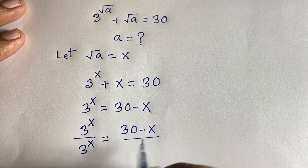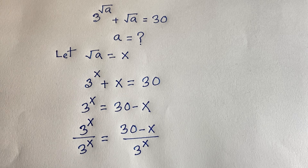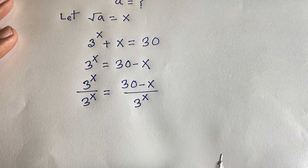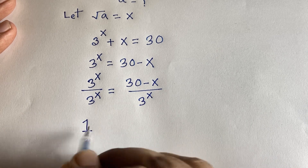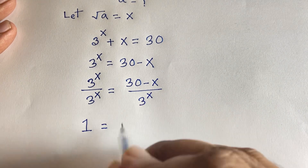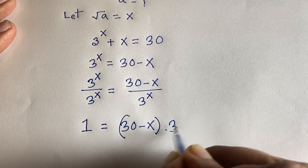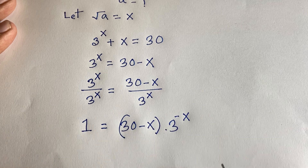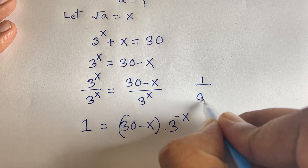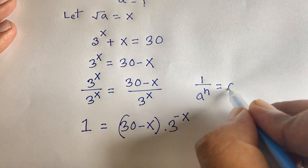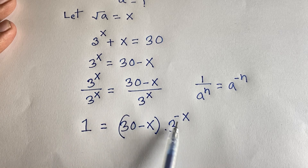Now I divide both sides by 3 to the power x. This gives 1 equals (30 minus x) over 3 to the power x, which equals (30 minus x) times 3 to the power negative x, using the exponential rule that 1 over a^n equals a to the power negative n.